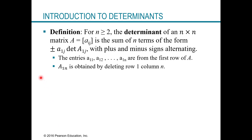Now let's expand. For a matrix of size n by n larger than two — so three by three, four by four, and so on — the determinant is the sum of n terms of the form plus or minus, where the signs alternate: A sub 1J times the determinant of capital A sub 1J. This is going to sound a bit abstract, but we'll work through it so you know what this notation means.